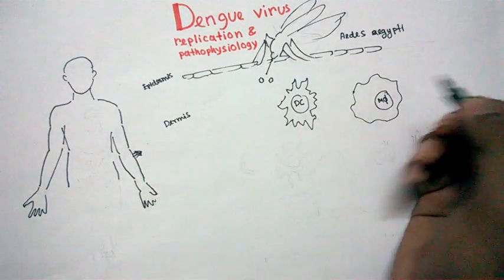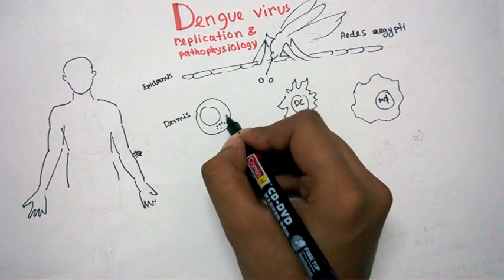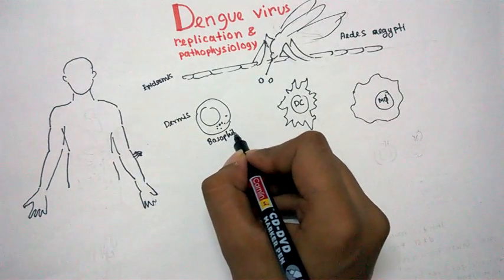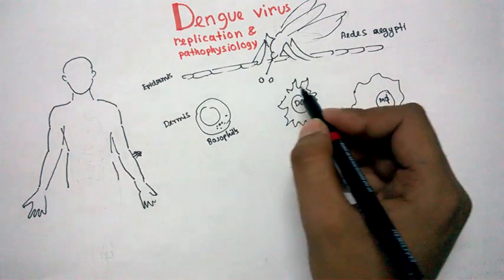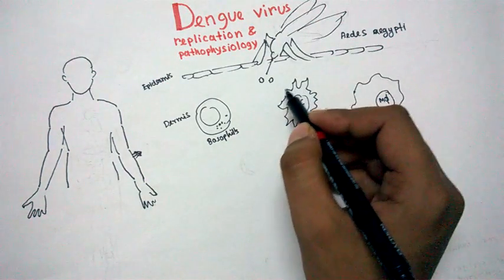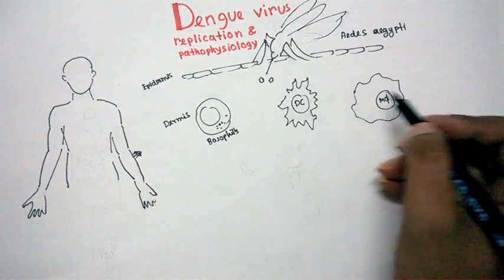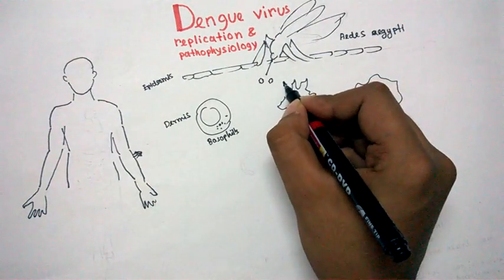This is our epidermis and we also have some macrophages denoting as M-phi and we are denoting it as DC also. What we have, we have granule secreting basophils.